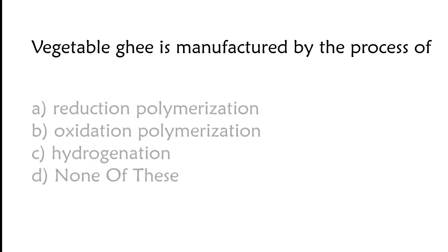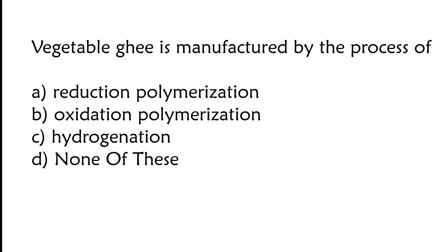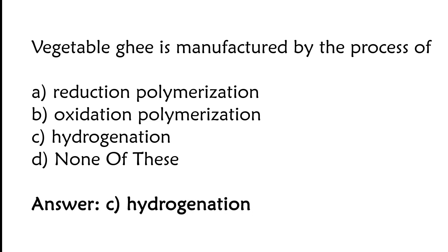Vegetable ghee is manufactured by the process of — options: reduction of polymerization, oxidation of polymerization, hydrogenation, none of these. The correct answer is option C. Vegetable ghee is manufactured by the process of hydrogenation.